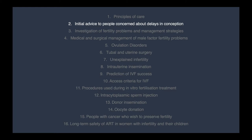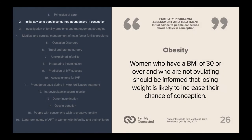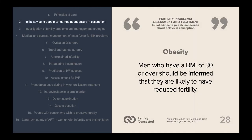Considerations of weight are important. Women who have a BMI of 30 or over should be informed that they are likely to take longer to conceive, and those who are not ovulating should be informed that losing weight is likely to increase their chance of conception. Participating in a group programme involving exercise and dietary advice leads to more pregnancies than weight loss advice alone. Men who have a BMI of 30 or over should also be informed that they are likely to have reduced fertility.